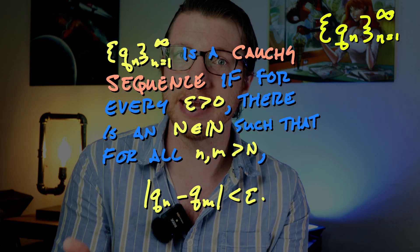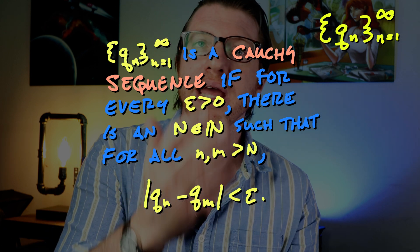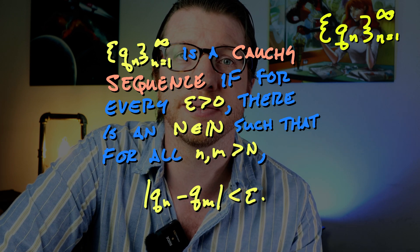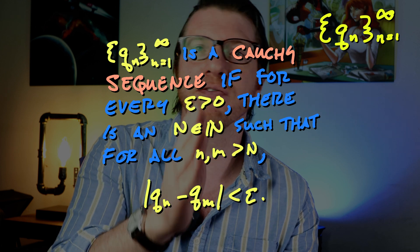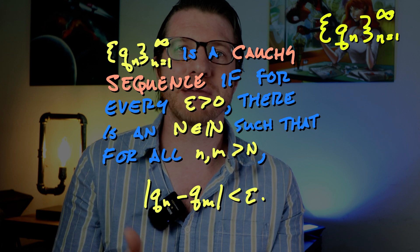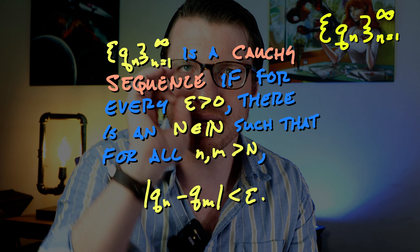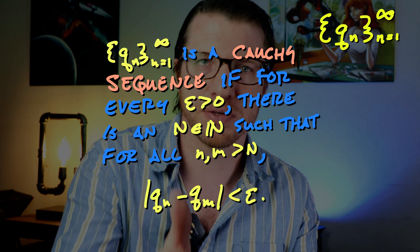A Cauchy sequence is a sequence that should morally be converging but might not literally converge — like the sequence of rationals approximating pi. Since pi isn't rational, the sequence can't converge within the rationals; it's outside that set. The point of real numbers is to fill in these holes using Cauchy sequences. Formally: a sequence q_n is Cauchy if for every positive rational epsilon there is a positive integer N such that for all n and m greater than N, the absolute value of q_n minus q_m is less than epsilon. Any convergent sequence is Cauchy, but not vice versa.